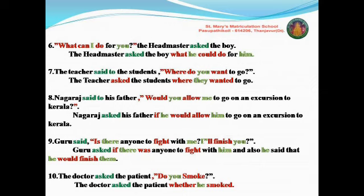Speaker and listener: write 'the headmaster' as it is. Reported verb changes: for an interrogative sentence, you should write 'asked'. The headmaster asked the boy. Remove the comma and open quotation. No conjunction for WH — you should write the same question word: 'what'. Next, 'I' will be changed into 'he'. 'Can' — this auxiliary will be changed into 'could'. 'Do' will be written as it is, because after 'could' you write only the present verb. Write 'for' as it is. 'You' will be changed into 'him'. The headmaster asked the boy what he could do for him.